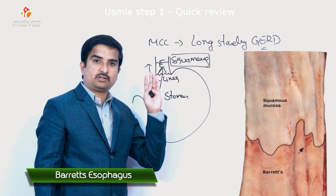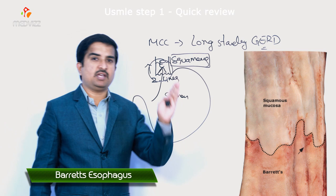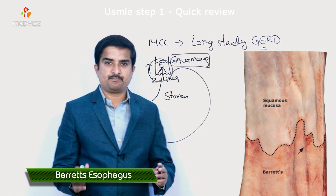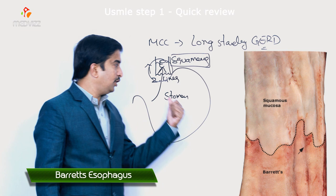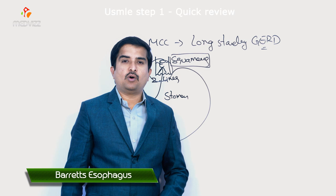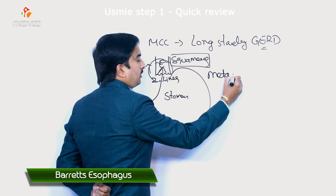In the case, orange gastric-type epithelium was described — this orange gastric-type epithelium, as seen in the picture, is the columnar epithelium. Squamous epithelium is converted into columnar epithelium. Orange gastric-type epithelium extending upward from the stomach to the distal tubular esophagus in a tongue-like or circumferential fashion on endoscopy is the hallmark of Barrett's esophagus.